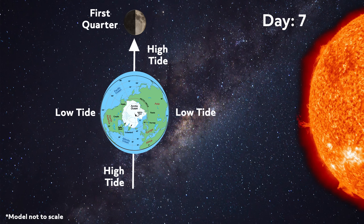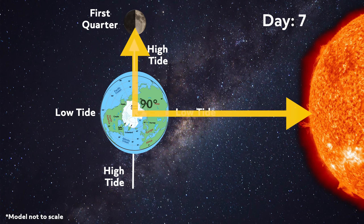When the moon reaches first quarter, in about seven days, you can see that the Sun, Earth, and moon form a 90-degree angle. When this right angle is formed, the bulges from the ocean cancel each other out. So the regular high tides and low tides become significantly lower. This is known as a neap tide — they are very weak tides.